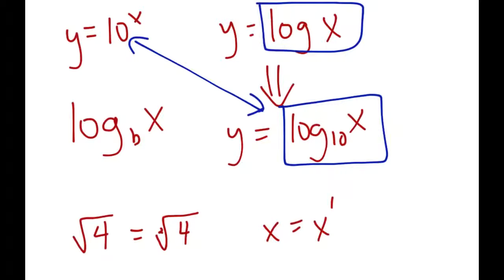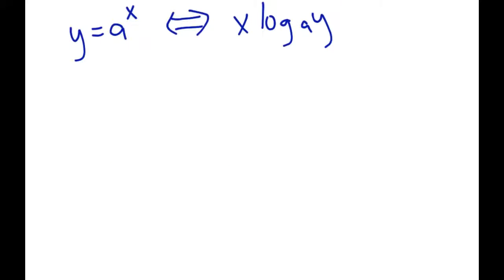On your calculator, when you hit the log button on the left-hand side, it automatically assumes you're doing base 10 — that's the standard. On the formula sheet you get when you write the diploma, they give you the conversion to switch from a regular exponential equation over to a log equation. So you can have y equals a to the x, or that same equation switches to x equals log base a of y. They're a little weird to convert back and forth, but once you do a few of them you'll get the idea, and you can switch it whichever way makes it easier to solve.